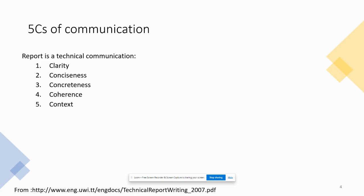A lab report is a form of technical communication, and you should recall from your basic communication courses the five C's of communication. Number one is clarity — you should be very clear and not write ambiguous sentences, reporting factual information. Number two is concise — there is no need to write extra long sentences or excessive information that may blur the factual content. Number three is concreteness — this refers to the accuracy of your data and facts.